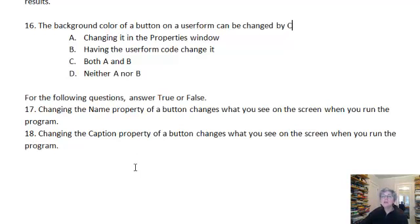For the following questions answer true or false. Changing the name property of a button changes what you see on the screen when you run the program. That's false. The name only pertains to programming. Changing the caption property of a button changes what you see on the screen when you run the program. That one's true. The caption is what the user sees.